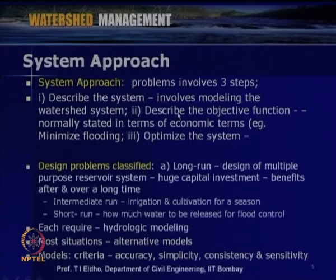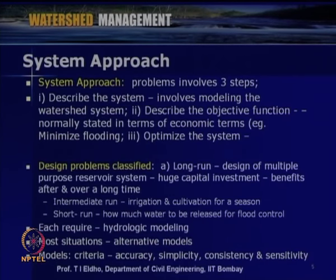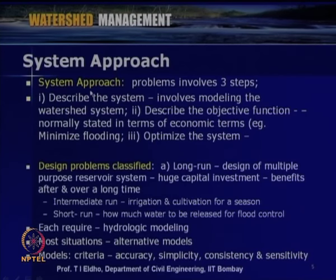Second, describe the objective function — whether we are going for optimization, such as minimizing cost and maximizing benefits. Third is optimization of the system. In a system approach, we describe the system, then go for simulation of the system, and then optimization of the system.